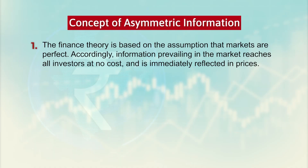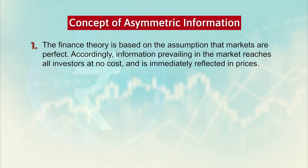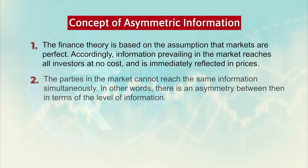The finance theory is based on the assumption that the markets are perfect. Because the information prevailing in the market may not be adequately perfect among all the members or the participators, and because information actually passes without cost, it is immediately reflected in the price and that makes the market to be imperfect. In some cases the parties cannot reach the same information simultaneously, because in most cases the sellers have more information compared to the buyers, and thereby the level of information is not symmetric.